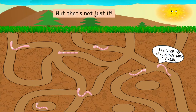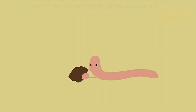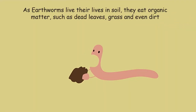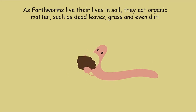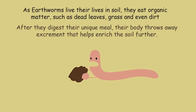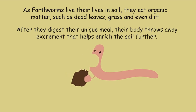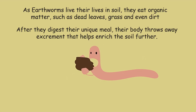But that's not just it. As earthworms live their lives in soil, they eat organic matter such as dead leaves, grass and even dirt. After they digest their unique meal, their body throws away excrement that helps enrich the soil further.